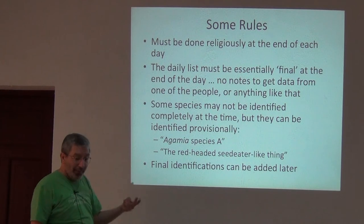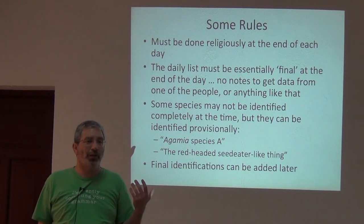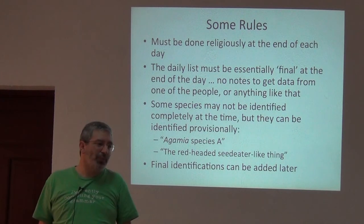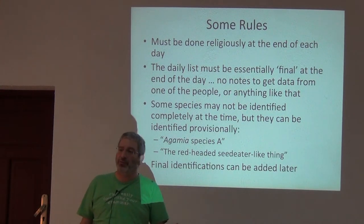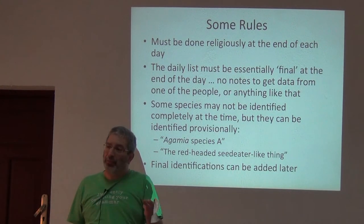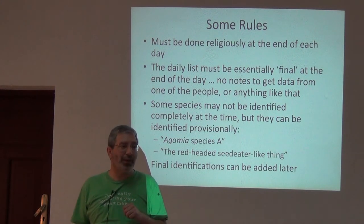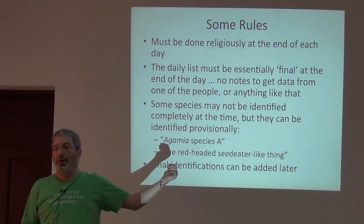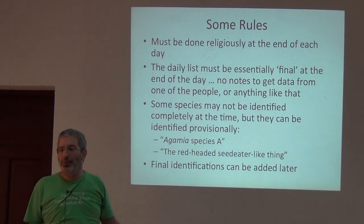The daily list gives you information about abundance or prevalence — some level of information about the species and its characteristics in that place. And these data are crucial to the inventory statistics that we'll be developing tomorrow. Without these data, you can't do it.